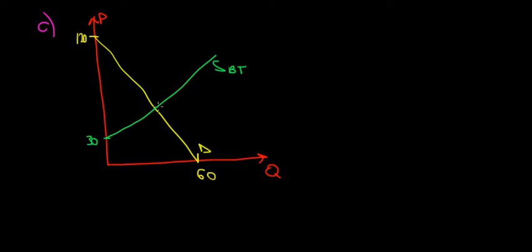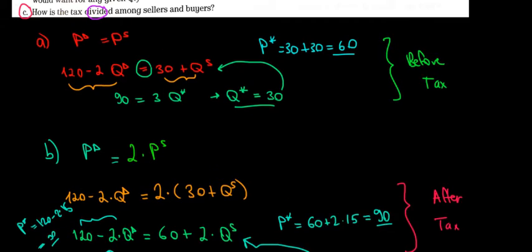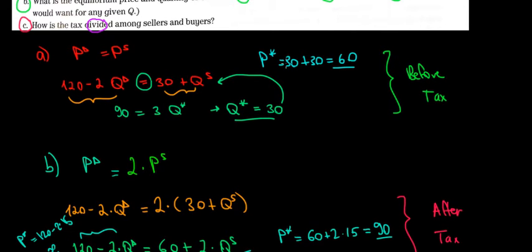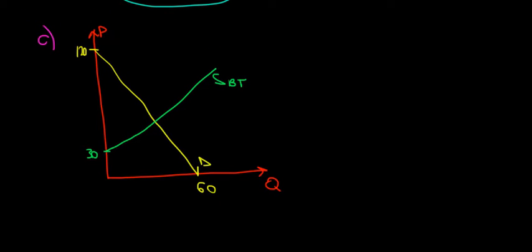What also matters is the equilibrium price and the equilibrium quantity. Before the tax, recall that was an equilibrium price of 60 and equilibrium quantity of 30. Let's draw that on the graph — equilibrium price of 60 and quantity of 30.